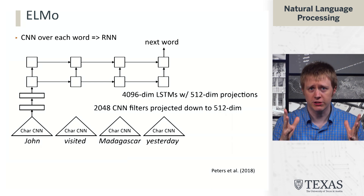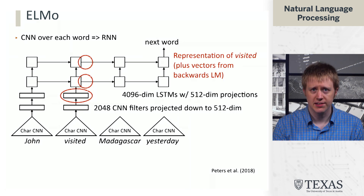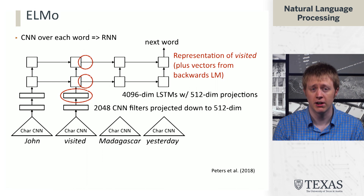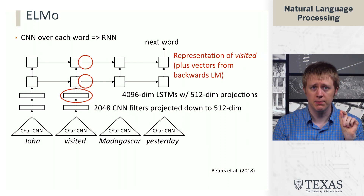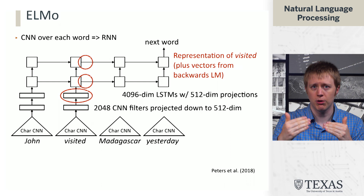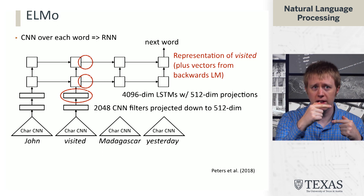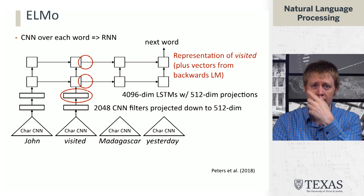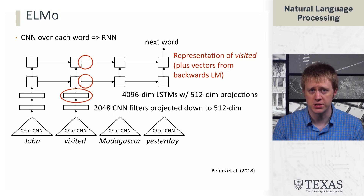This whole big architecture is trained to predict the next word. Then, to get the representation of the word 'visited,' you look at the CNN vector and also the LSTM states after the model has seen 'visited' — the internal state of the model as it's just seen that word and is trying to predict following words. You also run the whole process in reverse, so you have a forward LSTM and a backward LSTM producing the same sorts of representations. You take all of those vectors and call that your representation for 'visited,' which now depends on context.